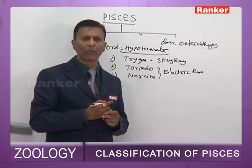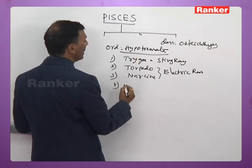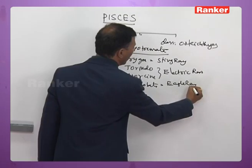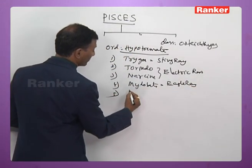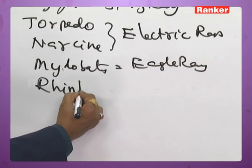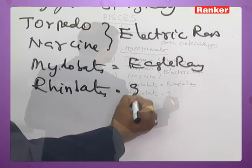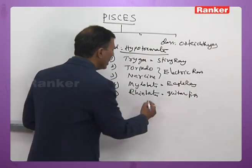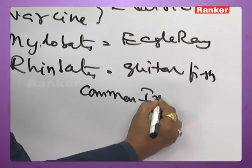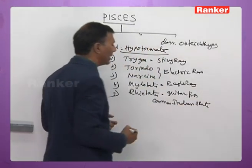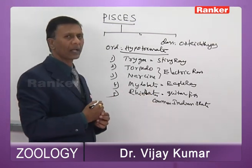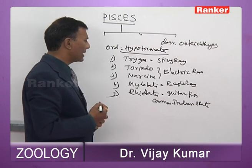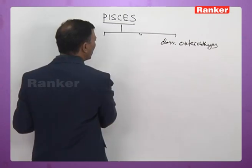Another Hypotremata example: Myliobatis, the eagle ray. Rhinobatos, commonly called guitar fish or common Indian skate. All these are examples for Hypotremata: Trigon — stingray; Torpedo and Narcine — electric rays; Myliobatis — eagle ray; Rhinobatos — guitar fish or common Indian skate.